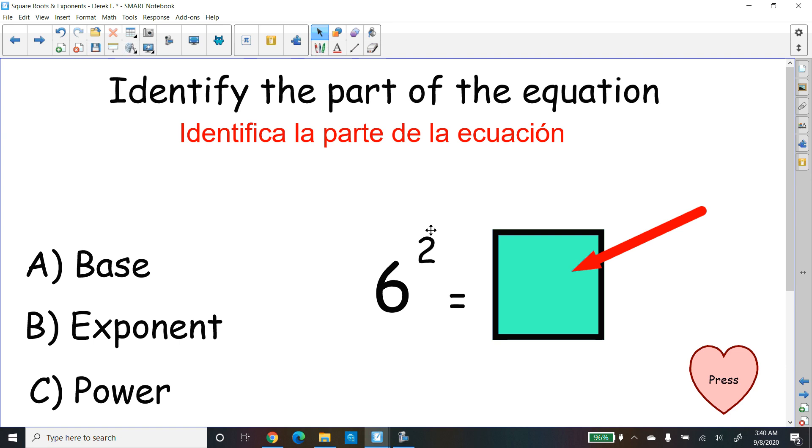Here's another one for you. Identify this part of the equation. This time, they're pointing into the box, and we have a 6 to the second power. So they want the answer. What is it equal to? And remember, the answer is called the what, Derek? That's right. Power, you got it. That's letter c.